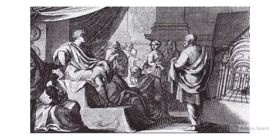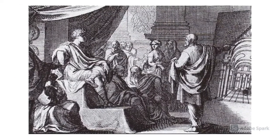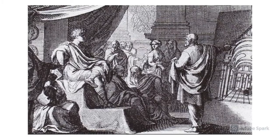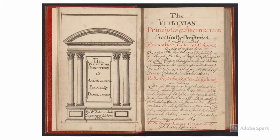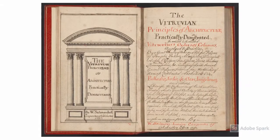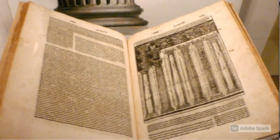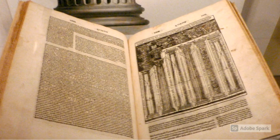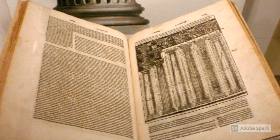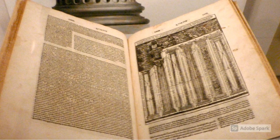Vitruvius was a first century Roman architect, writer, and engineer. He was the most celebrated author of a book titled De Architectura, or On Architecture. His books illustrated principles that continue to teach architects 2100 years later.